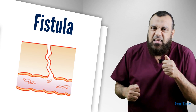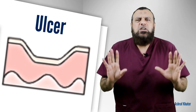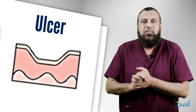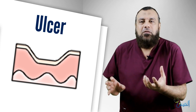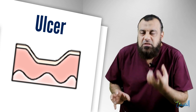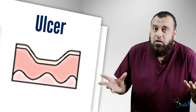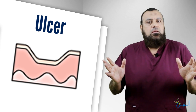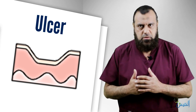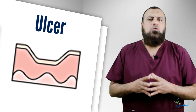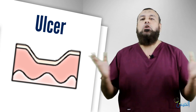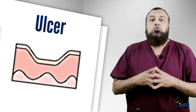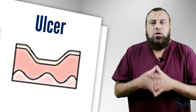The sinus is blind. An ulcer, by contrast, is simply a discontinuity of the skin or mucous membrane — a defect. It may be traumatic in origin or pathological in origin by any cause. This is the definition of the ulcer: discontinuity of the skin or mucous membrane, either traumatic or pathological.